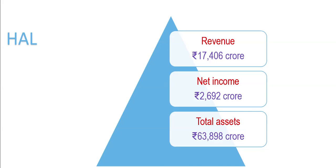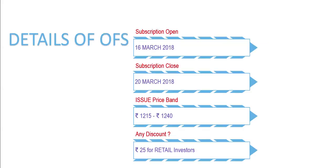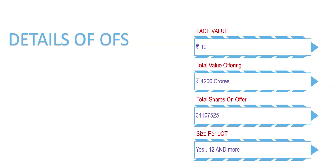Now let's get into the details of the OFS. The subscription runs from 16th to 20th March, and the issue price band starts from 1,215 to 1,240 rupees. There is a retail investor discount of 25 rupees. The face value is set at 1,210 rupees. The total value being offered is around 4,020 crores. The total number of shares are as shown, and the minimum lot size is 12 shares — investors must buy in lots.